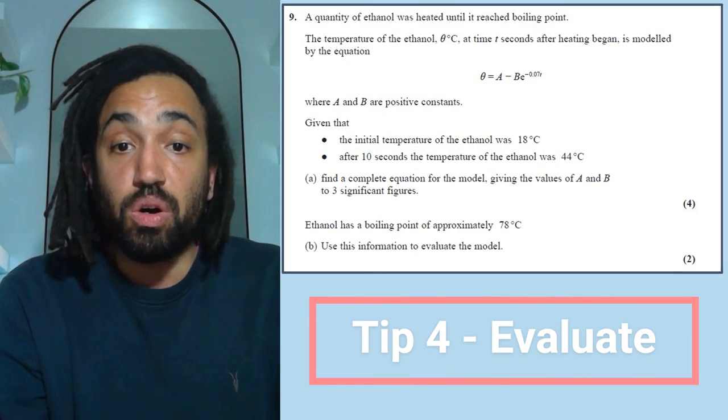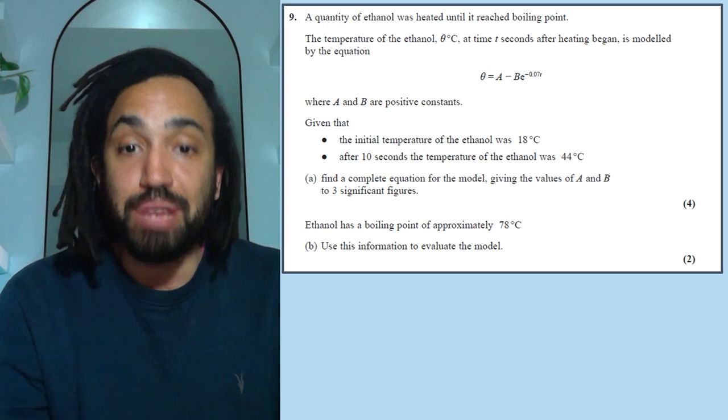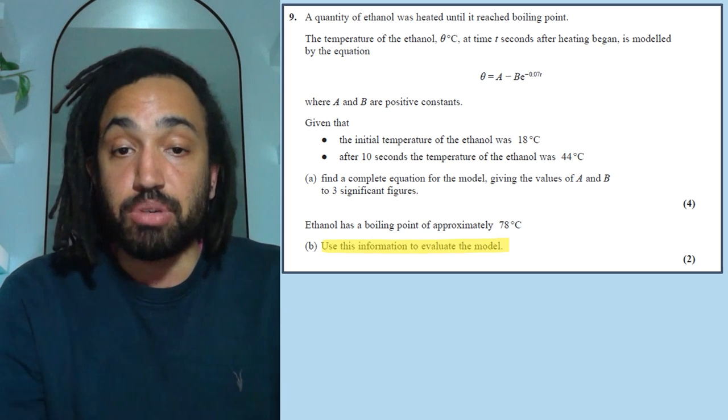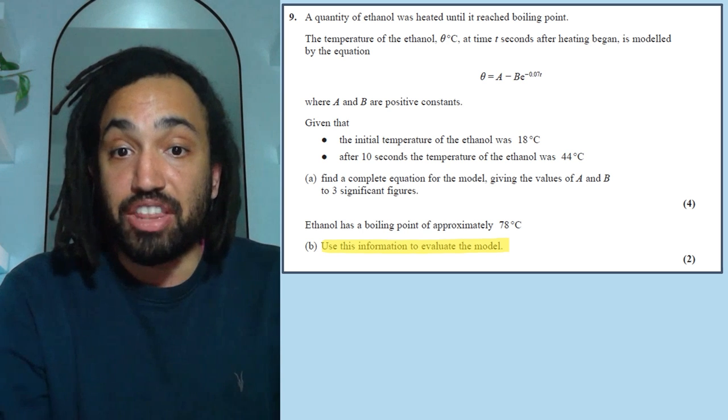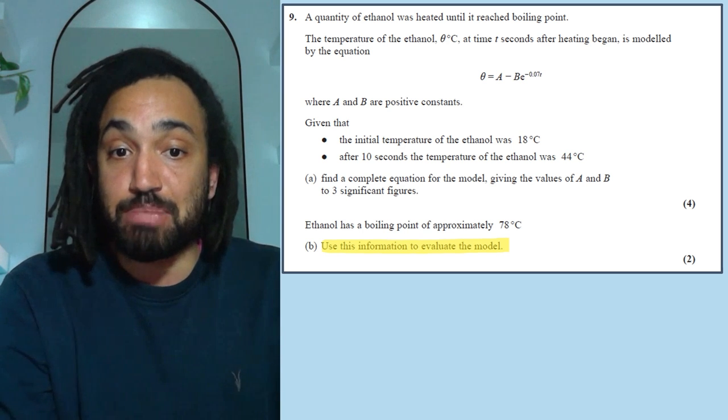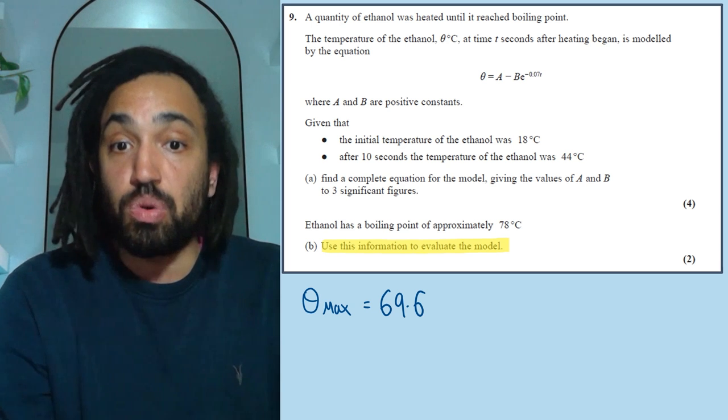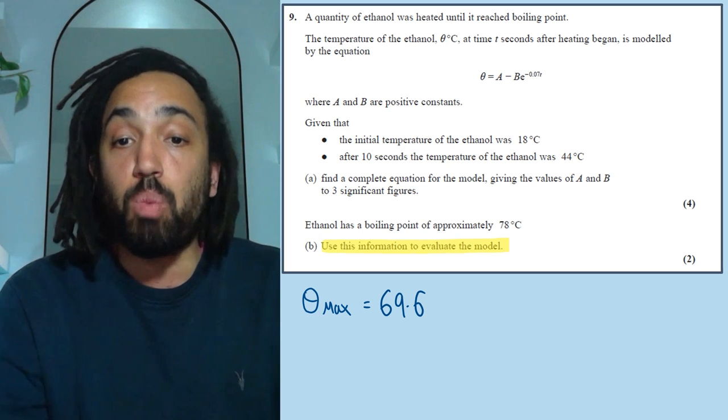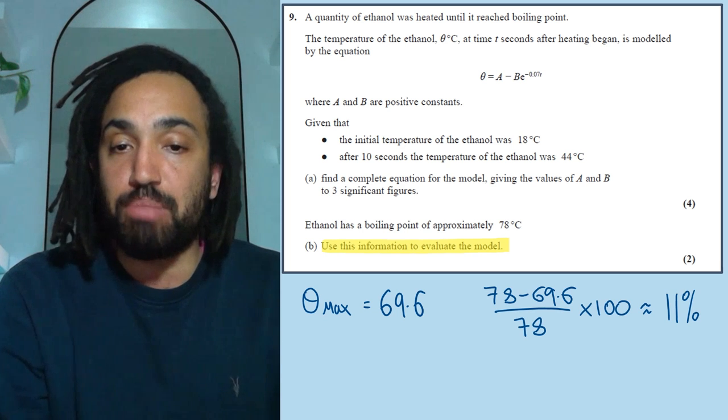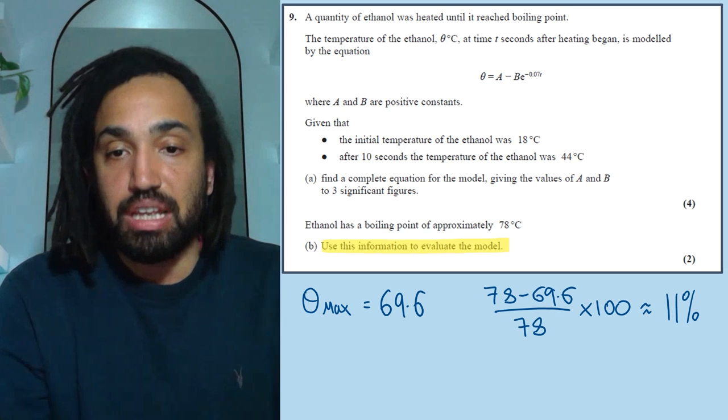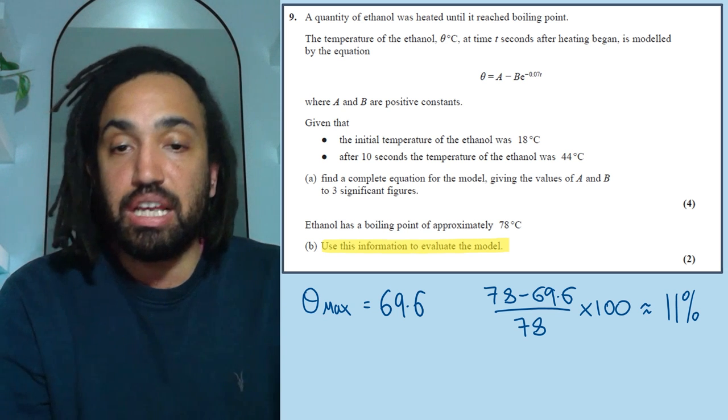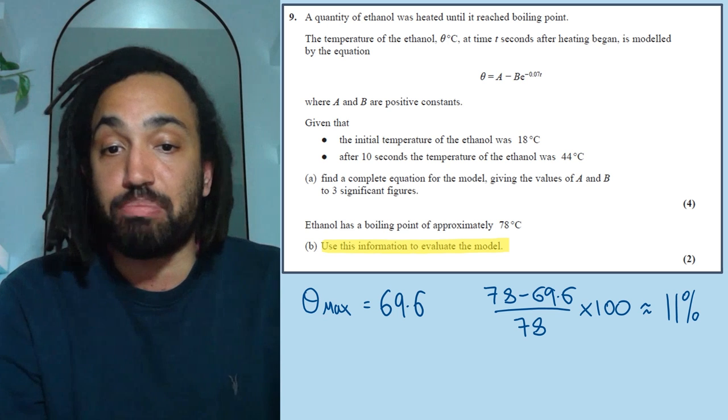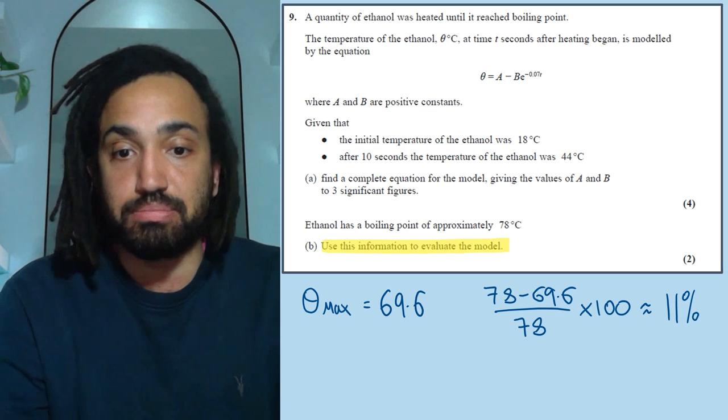Next question, and this moved me on to tip number four, and that is evaluate the model, those pesky little two markers at the end of a question. Now, if I'm trying to evaluate a model, what I'm going to want to do is I'm going to want to find out the predicted value that the model gives, which in this case is that the maximum feet of temperature is 69.6. And the actual value of the boiling point, which in this case, we're told is 78. And I want to work out what is the percentage error between my model and my exact value. Now in this question, I get a percentage area of about 11%. And to me, that means the model is not a good model, it's not reliable, you're looking for percentage error to be less than 5% for it to be deemed a good model.